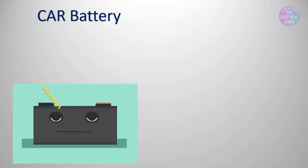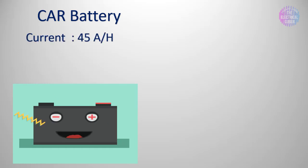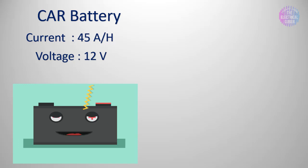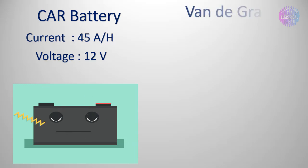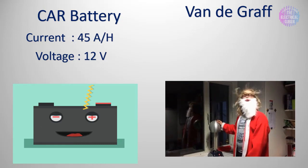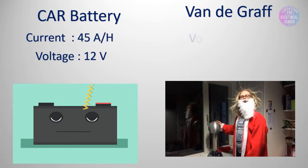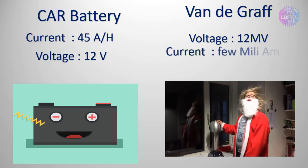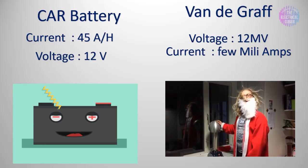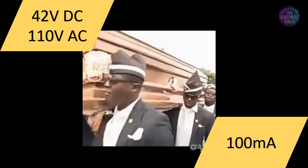Consider two contradictory examples. A car battery has 45 amperes but doesn't cause a shock because it has only 12 volts, and 12 volts is not sufficient to force that current through a body with 100,000 ohms resistance. On the other side, a Van de Graaff generator produces voltage of around 12 megavolts, and still we don't get severe shock because it produces only a few milliamperes of current. Hence, when voltage is above 42V DC or 110V AC and current is above 10 milliamperes, we get a shock, and if current goes beyond 100 milliamperes, it's lethal.